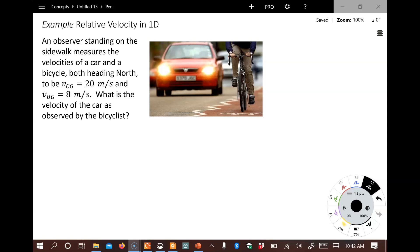Well, from the ground point of view, the bike's going 8 meters per second due north, and the car is going 20 meters per second due north. So from the bike's point of view, it looks like the car is only going 12 meters per second. So if you've got 12 meters per second for that one, great.